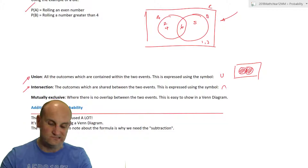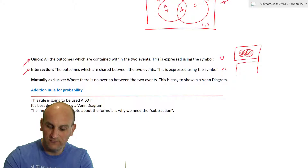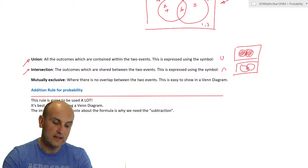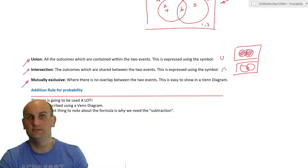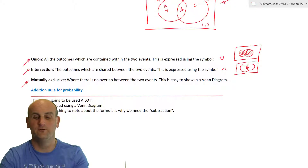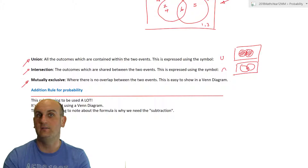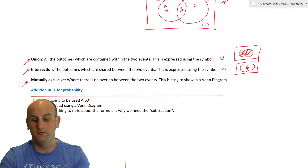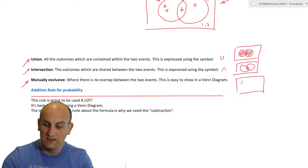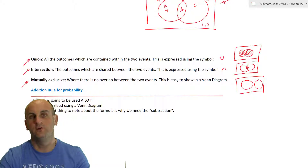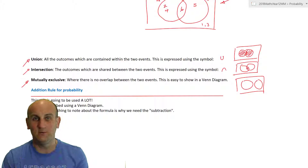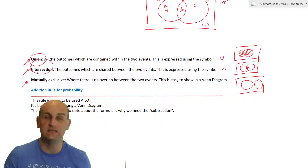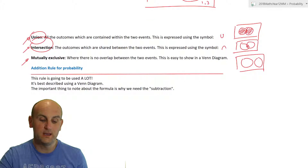The language is really important. Union means all of the outcomes contained within the two events — given by the symbol U — basically everything in both circles. Intersection is where things are shared, given by the ∩ symbol, and on a Venn diagram it's that overlapping bit. Mutually exclusive events have no overlap at all — for example, odd numbers and even numbers can never share an outcome.